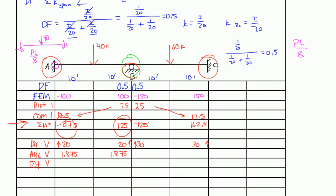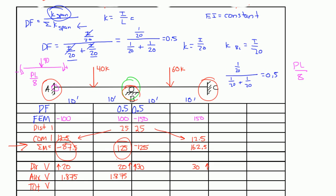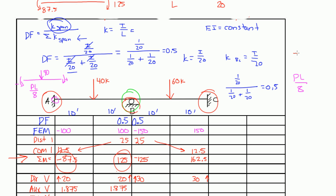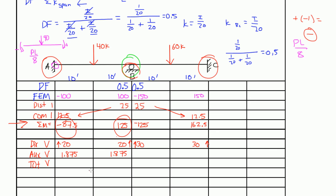To figure out the direction, we sum the moments and multiply by negative 1. We had positive 125 and negative 87.5 — adding those gives a positive value. We multiply by negative 1, so the final direction is negative, which is counterclockwise. That means the auxiliary shear on the right side is going up and on the left side is going down.